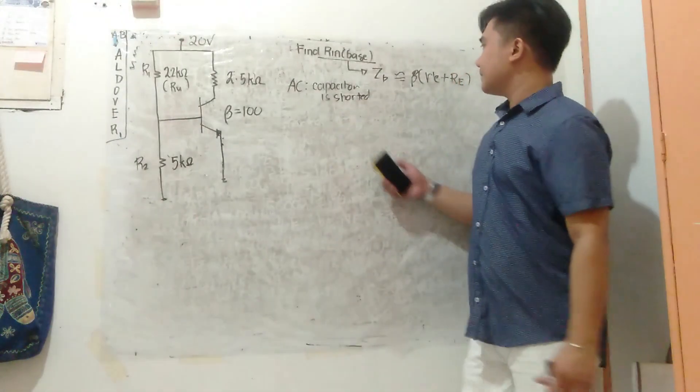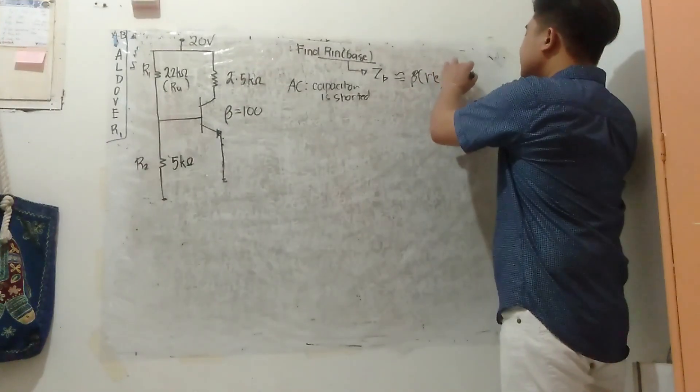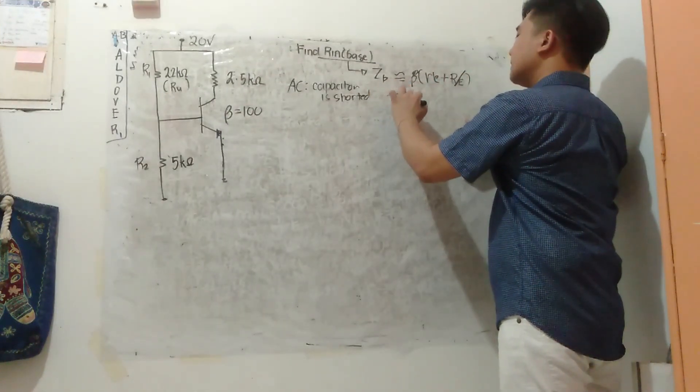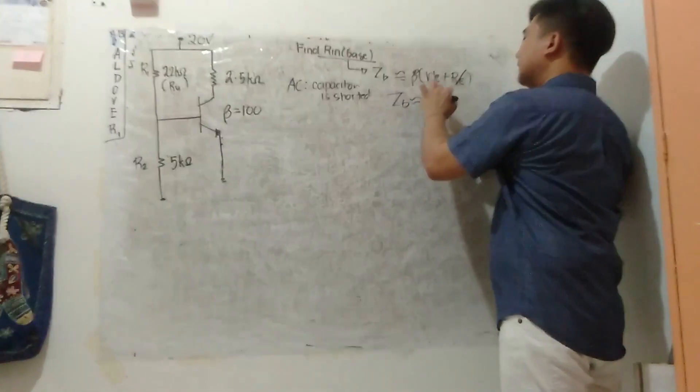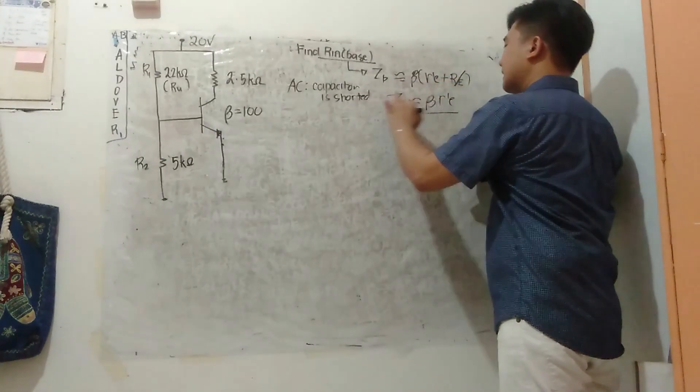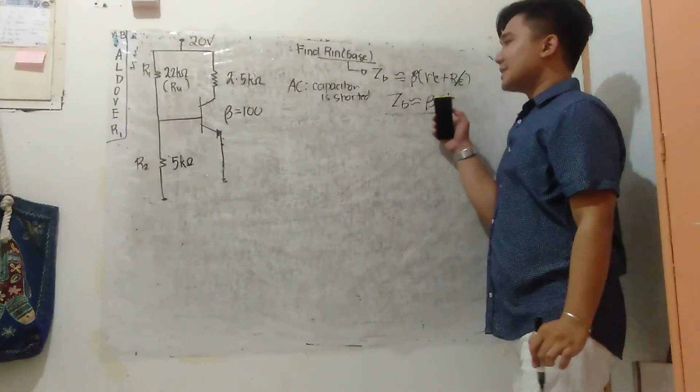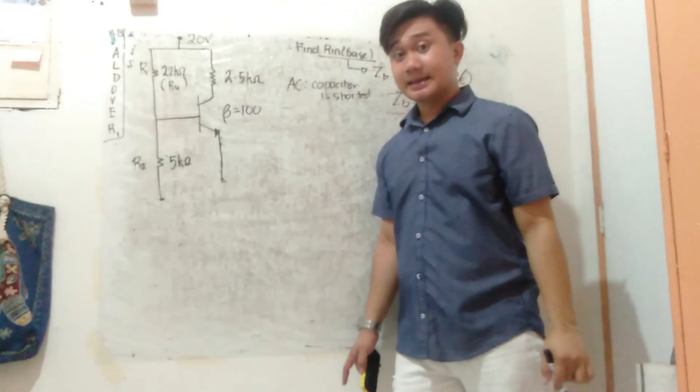So if I look at ZB, R_e is now zero, so my ZB is approximately beta R'e only. So I need to find R'e first.